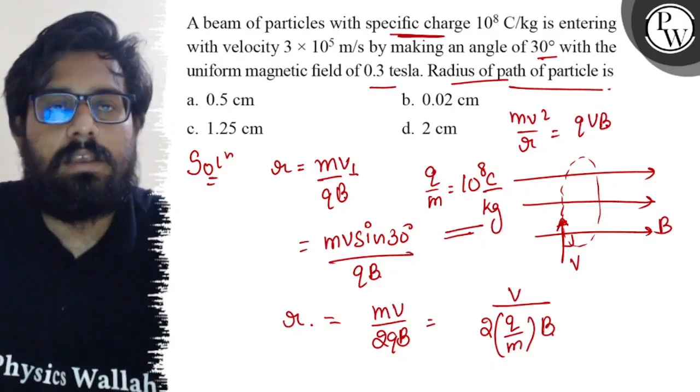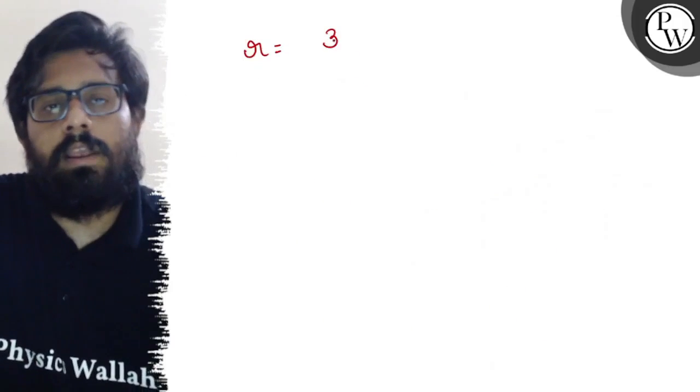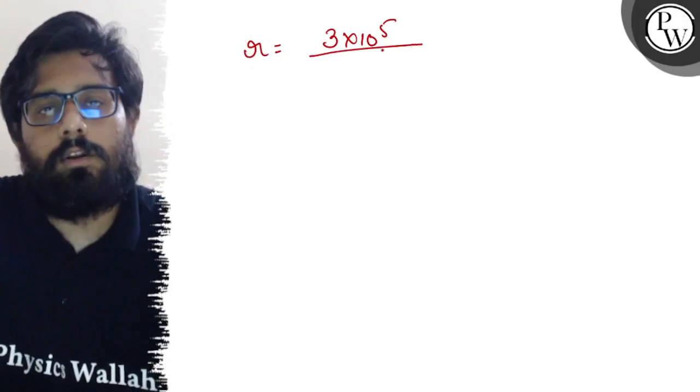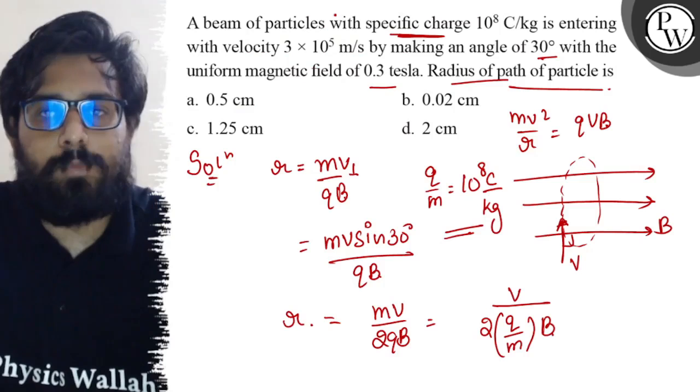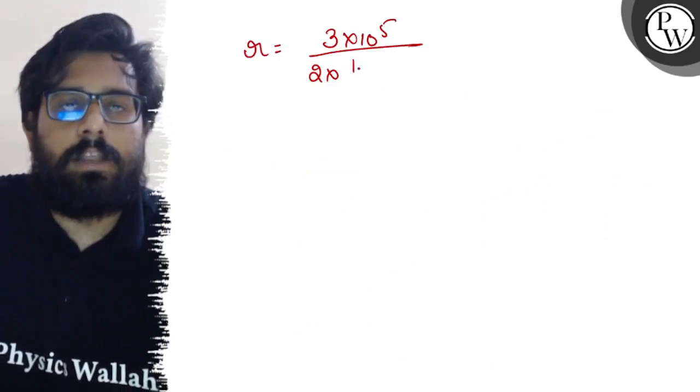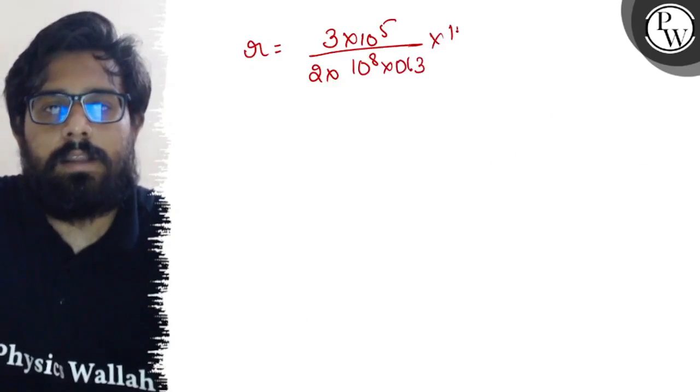r can be written as: the value of the velocity is 3×10^5, so 3×10^5 upon 2 into q by m. q by m is 10^8, and B is 0.3. So we have 10^8 and 0.3.